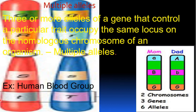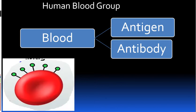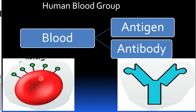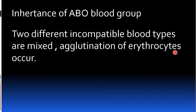The classic example is the human blood group, which occupies the same locus. Blood has a chemical nature involving two substances: antigen and antibody. Antigens are present on erythrocytes (RBCs), and the RBCs carry these antigens. When two incompatible blood types mix, there is agglutination.